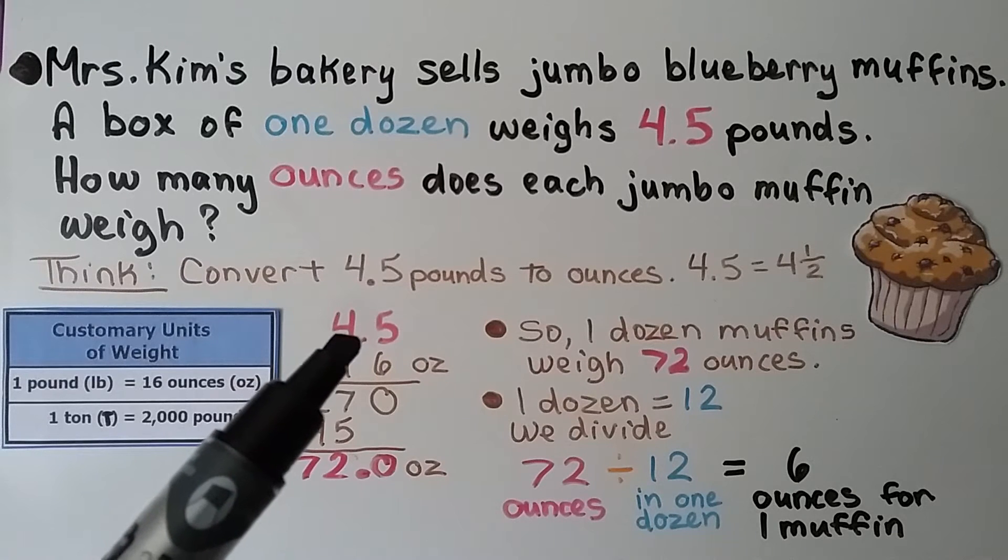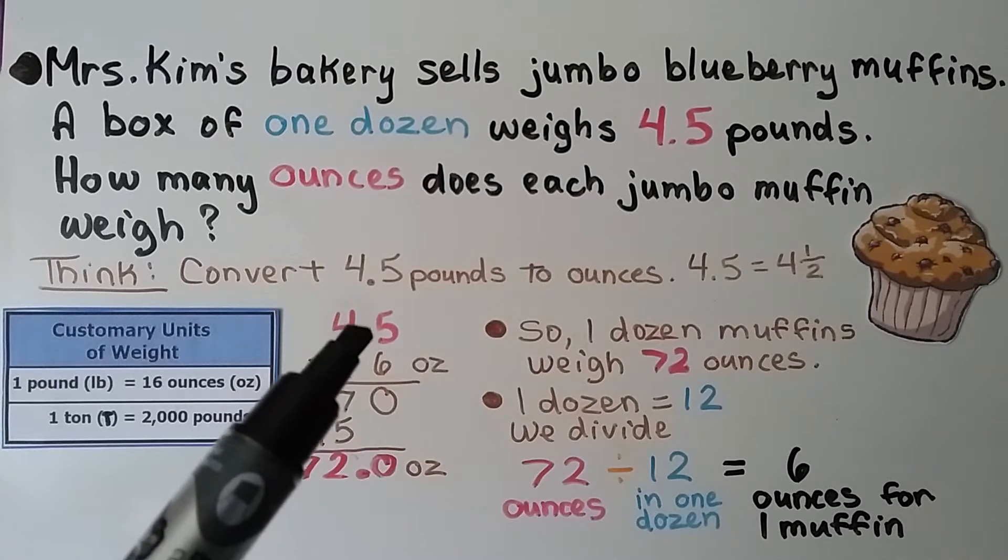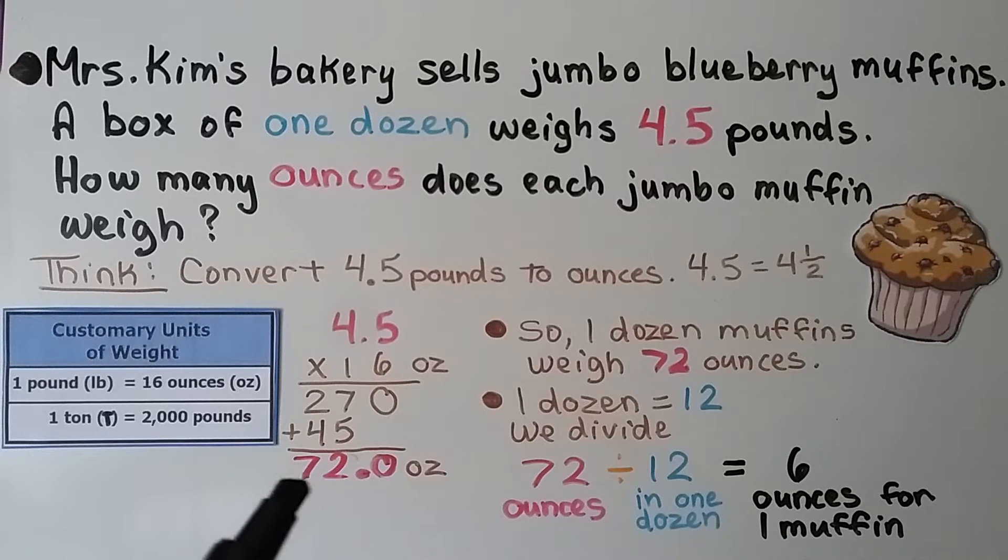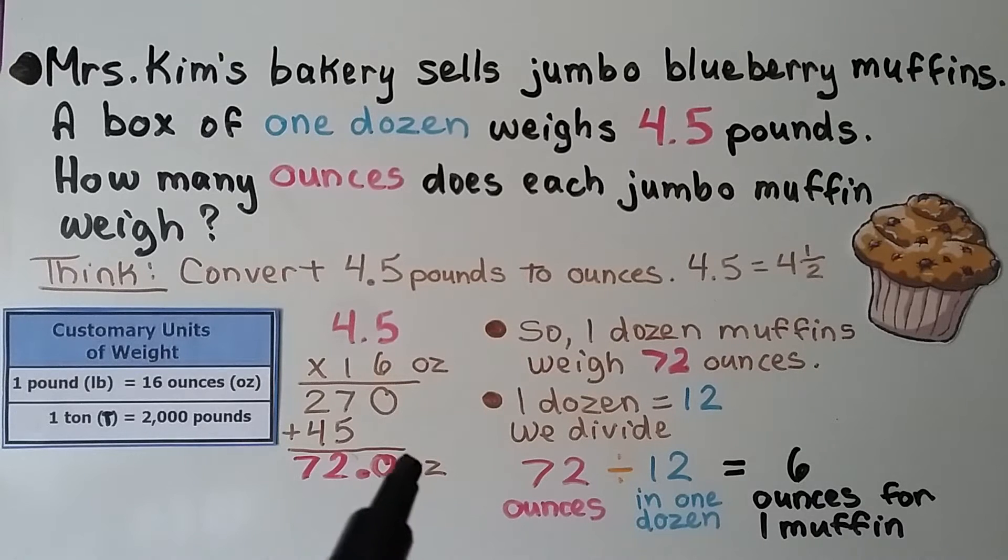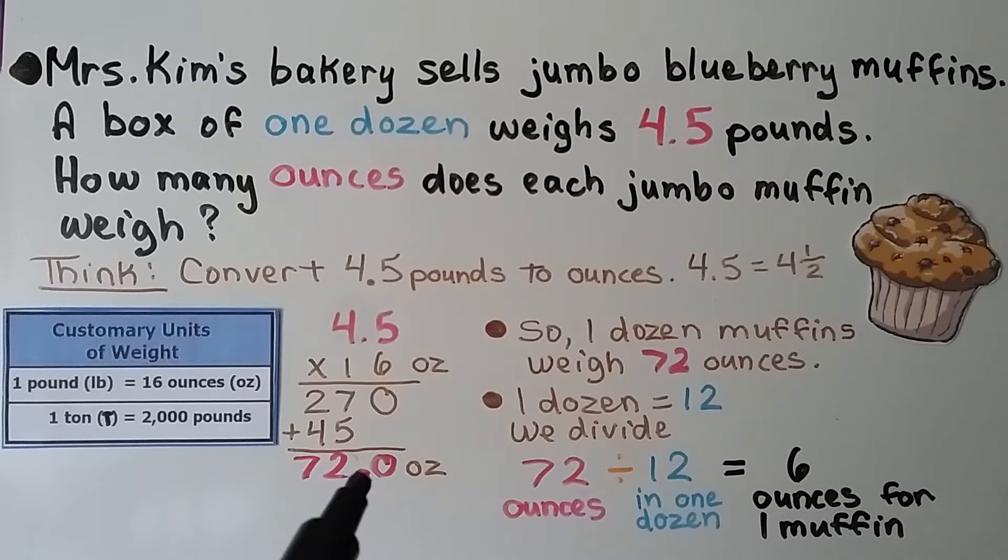We had one decimal point in the equation. That's one hop. So when we had a seven, a two, and a zero, we had to put that one decimal hop into the product. It came out as 72 ounces. So one dozen muffins weighs 72 ounces.